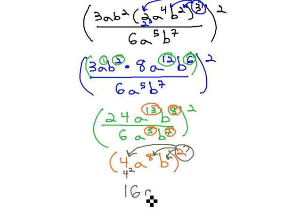However, on the a's, the 8 is an exponent, and so using the power of a power rule, we do multiply 8 times 2 to get 16, and b to the 2nd power. Each variable appears only once, so we know we have our final answer of 16a to the 16th b squared.